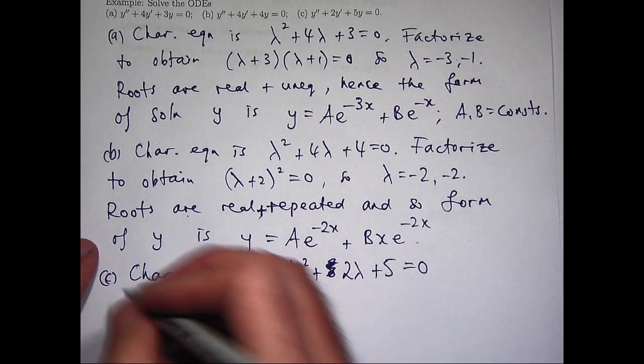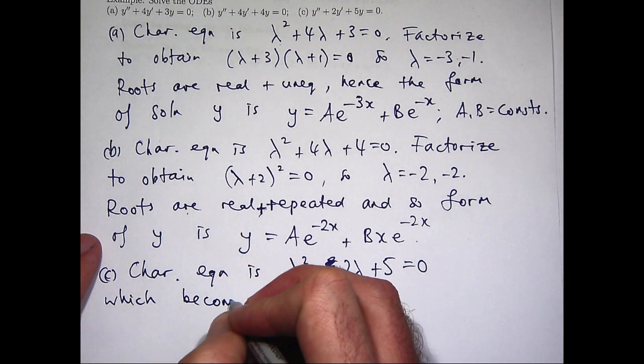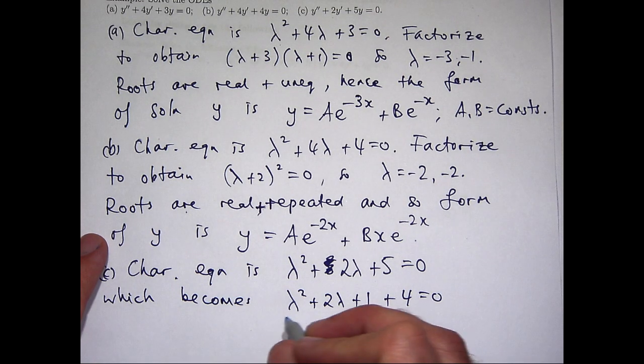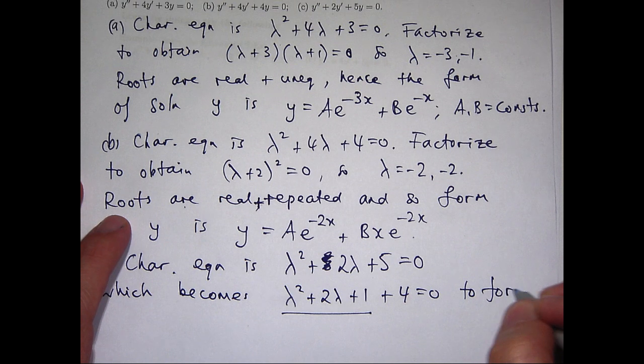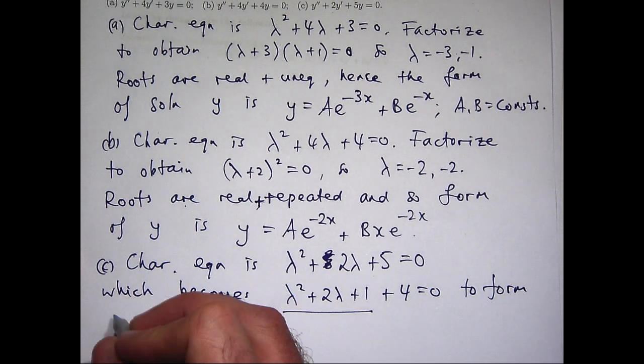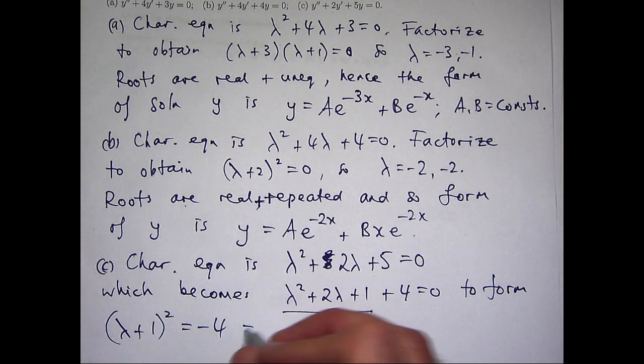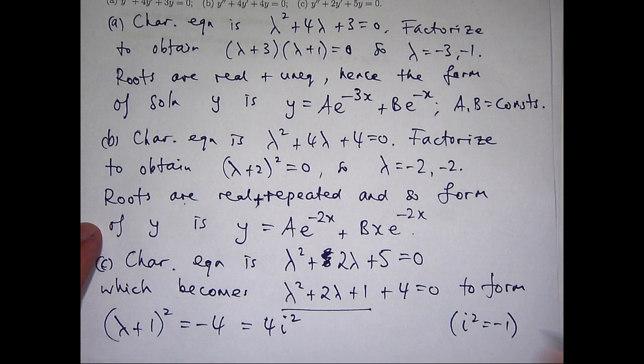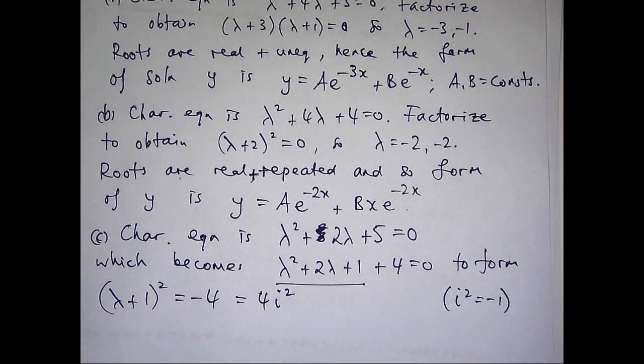Now those first three terms can be factorized. So the first one's going to be the following. Now I take that positive 4 to the other side, and I know that minus 4 is just 4i squared. Remember, i squared equals negative 1. So what I can do is take the positive and negative square roots and rearrange.